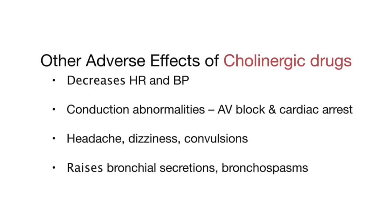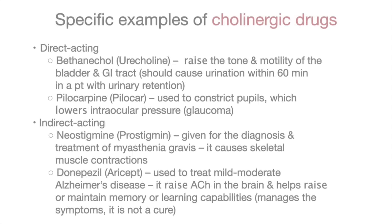The antidote for cholinergics is the anticholinergic drug atropine. Some specific examples of cholinergic drugs include direct acting bethanechol, or urocholine, which increases the tone and motility of the bladder and GI tract and should cause urination within 60 minutes in a patient with urinary retention. Pilocarpine, or pilocar, is used to constrict pupils, which decreases intraocular pressure and is used for glaucoma.